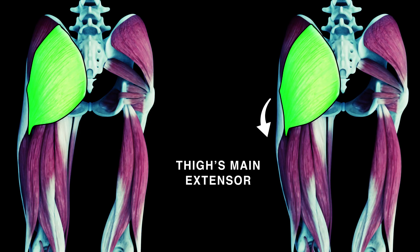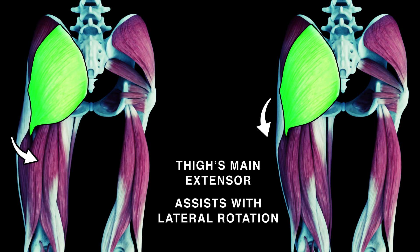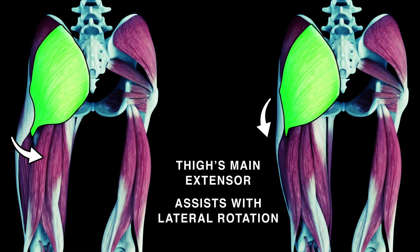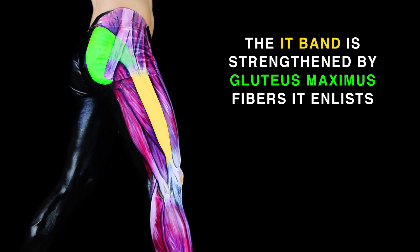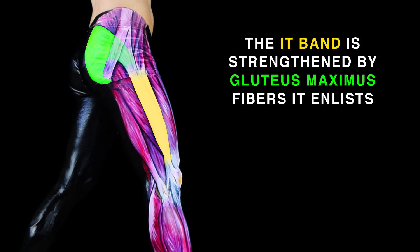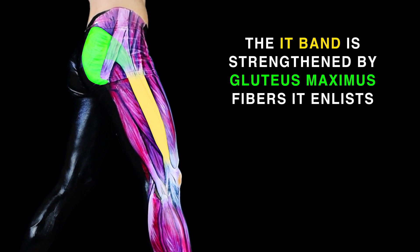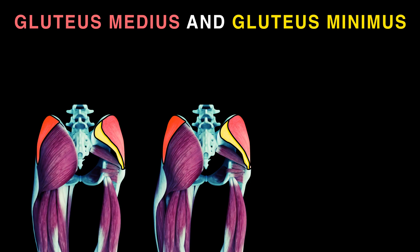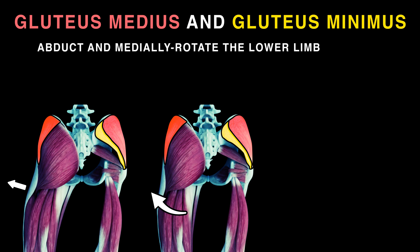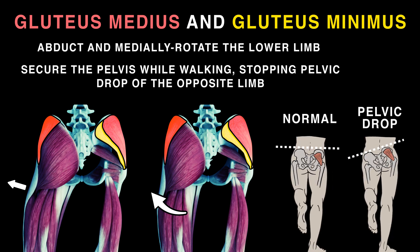Gluteus maximus is the thigh's main extensor and assists with lateral rotation. The IT band is strengthened by gluteus maximus fibers it enlists. Gluteus medius and minimus abduct and medially rotate the lower limb.